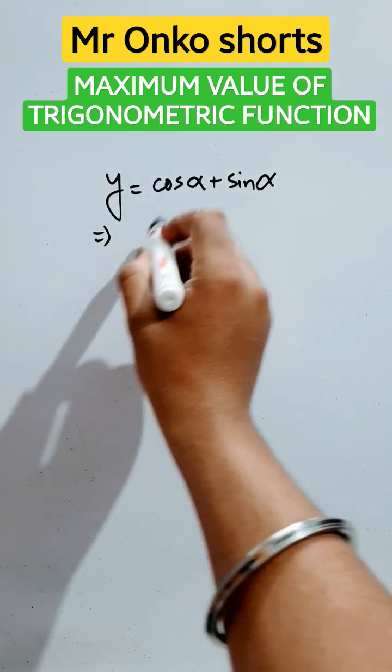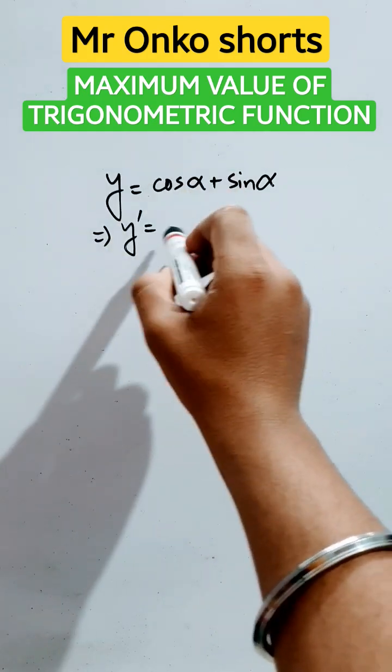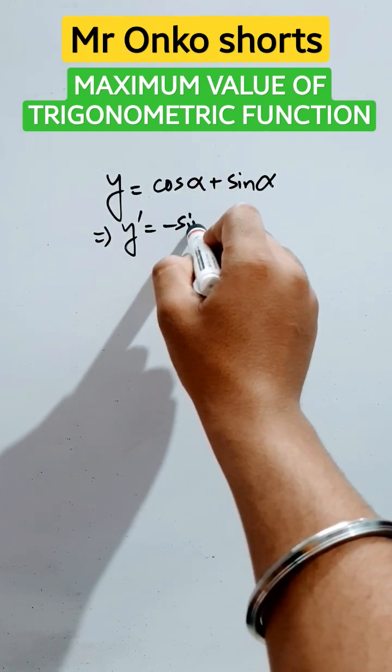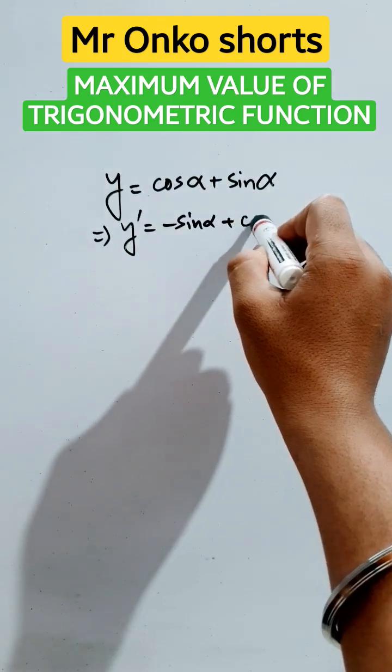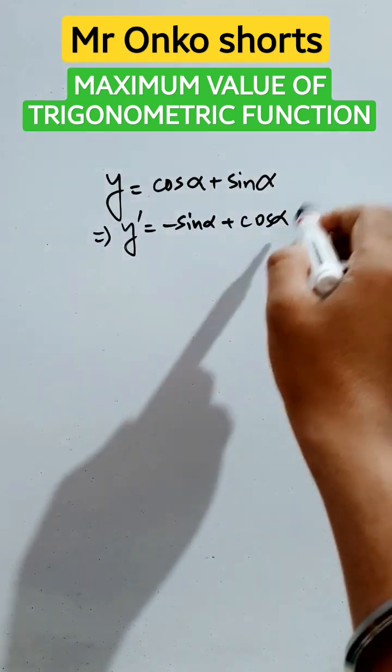Let's find the max or min value from the given function. First of all, let's take the derivative, first derivative, it will be minus sine alpha plus cos alpha with respect to variable alpha.